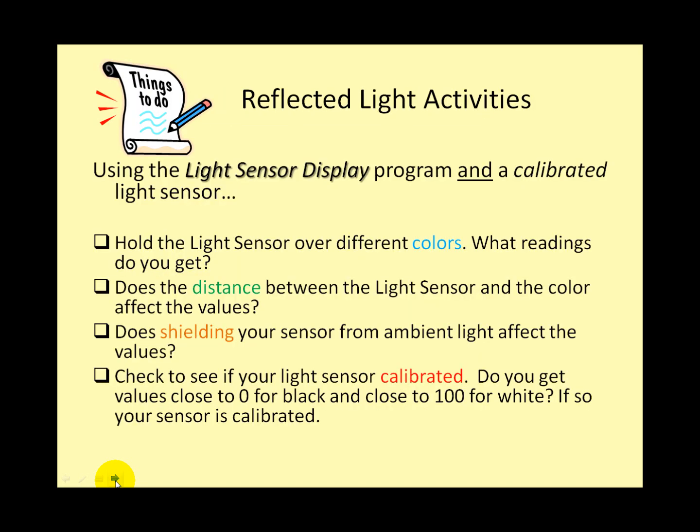Once you have the program up and running, here are some ideas of things you could try. These have to do with holding the light sensor over different colors, varying the distance between the light sensor and the color, and shielding your sensor from ambient light. You can see what happens and if it affects the values. Also, you could use this program just to see if your light sensor has been calibrated or if the calibration is still good. Do you get values close to 0 for black and close to 100 for white? If so, your sensor is calibrated.